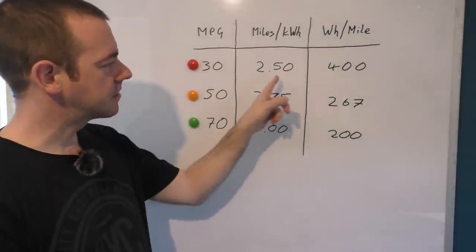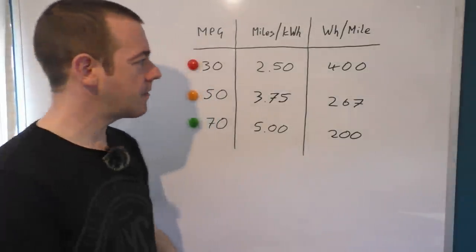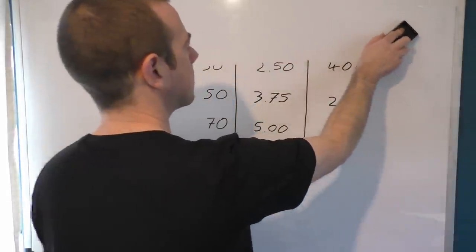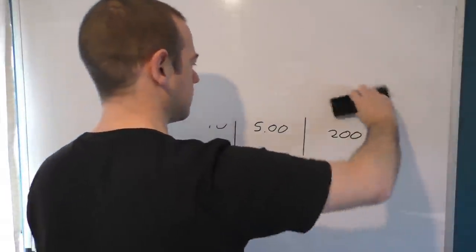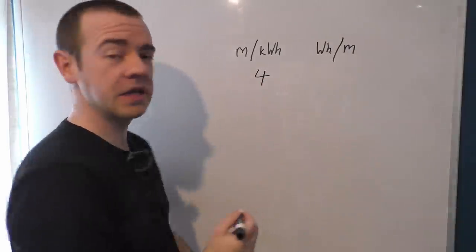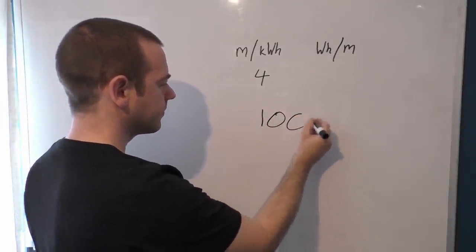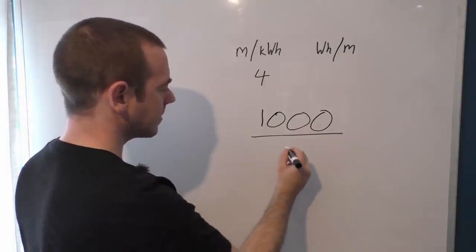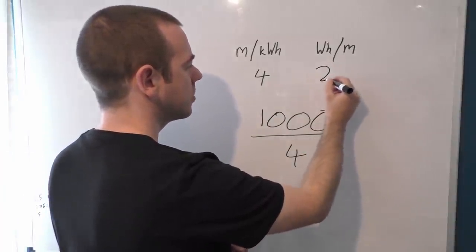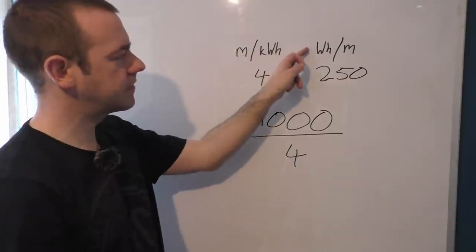Now, how do we change that to that? Well, it is very straightforward and effectively just involves the number 1000. Let's imagine we have 4 miles per kilowatt hour and we want to convert that into watt hours per mile. Basically, we take the big number 1000 and then divide that by the miles per kilowatt hour which effectively gives us 250. So 1000 divided by the miles per kilowatt hour gives you the watt hours per mile.